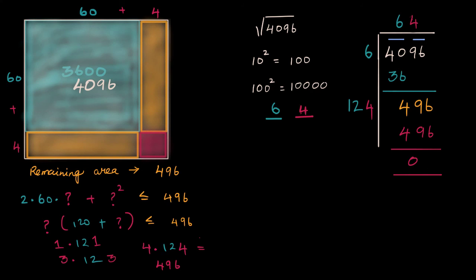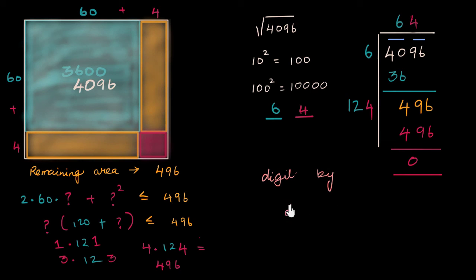Maybe a better name for this would be a digit-by-digit method of finding the square root, because that tells you a lot more about what you're really doing. So you have the recipe now, but you also understand why this recipe works.